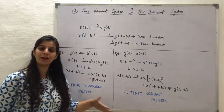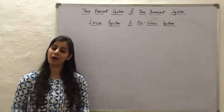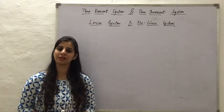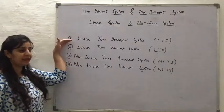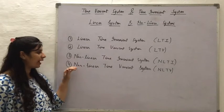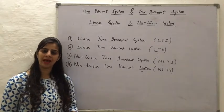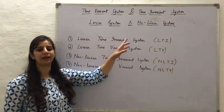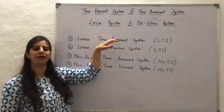With these examples, I hope you would have understood how to check whether a system is time variant or time invariant. After knowing time invariant and variant systems, and also linear and non-linear systems, there is one more categorization possible: linear time invariant, linear time variant, non-linear time invariant, and non-linear time variant systems. Out of all these, the most simple and most important with respect to signals and systems is the linear time invariant system. All systems we will be dealing with henceforth will be linear time invariant systems only.